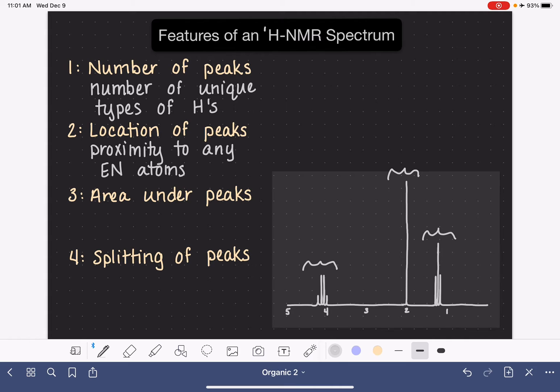Also, we get some information about the number of hydrogen atoms from the area under the peaks. The area under each peak corresponds to the actual number of hydrogen atoms that are associated with that peak.